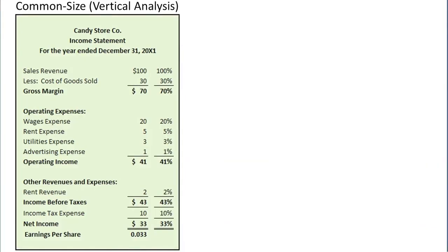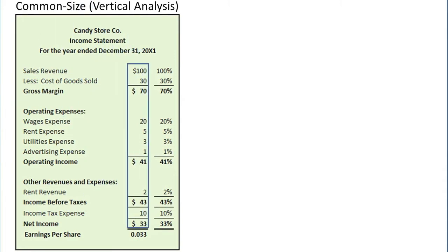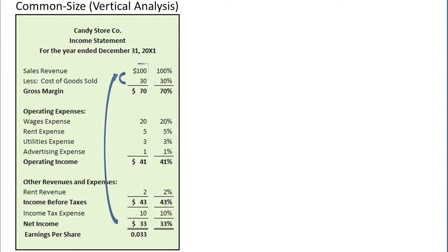As you learned in prior topics, common size multi-step income statements have many benefits. For example, the common size income statement enables the user to perform a vertical analysis of all items on the income statement in relation to sales revenue. It is called a vertical analysis because numbers in the same vertical column are compared to another number — sales revenue — in the same column to compute a ratio, such as gross margin divided by sales revenue equals gross margin ratio.